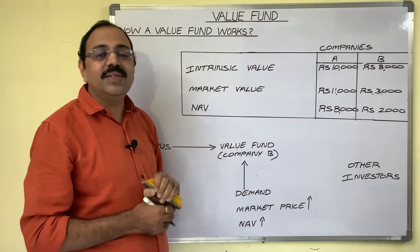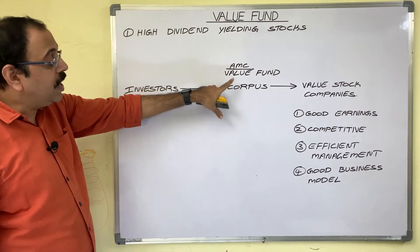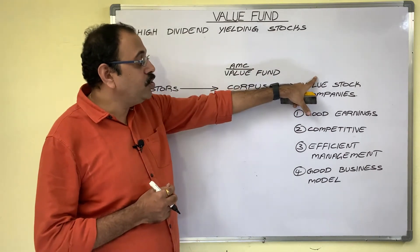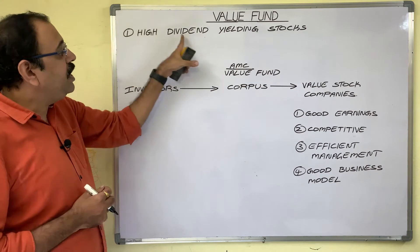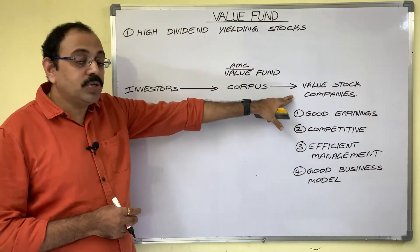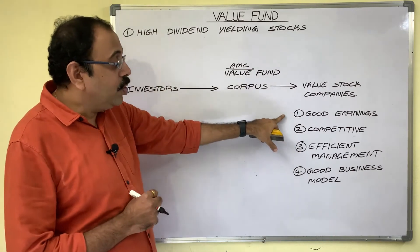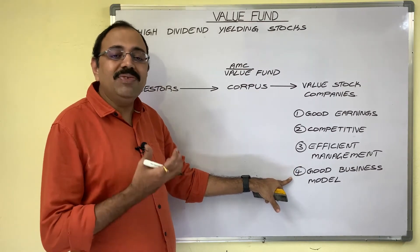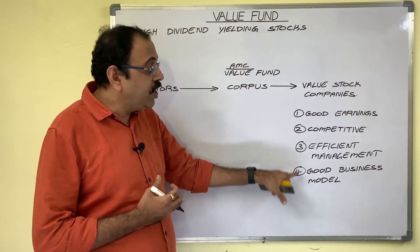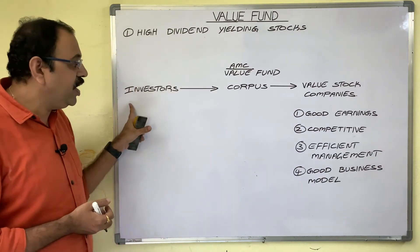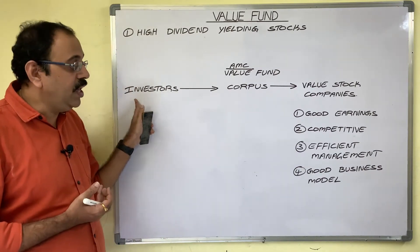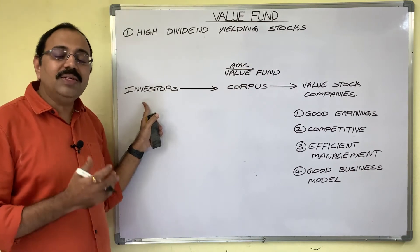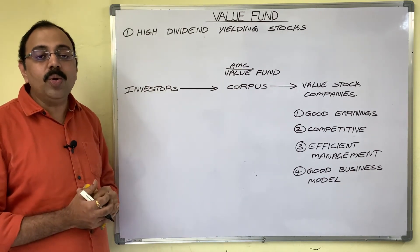When an AMC launches a value fund and collects corpus from investors, the maximum portion of the corpus is invested in value stock companies. Value stocks are high dividend-yielding stocks because these companies possess good qualities like strong earnings, competitiveness, efficient management, and a good business model. Companies with these qualities generally pay regular dividends to shareholders, so mutual fund investors can get regular returns — making these funds suitable for retired people who expect regular income.